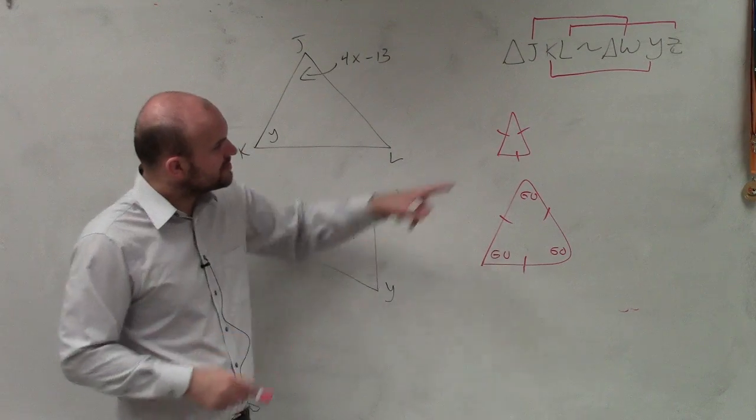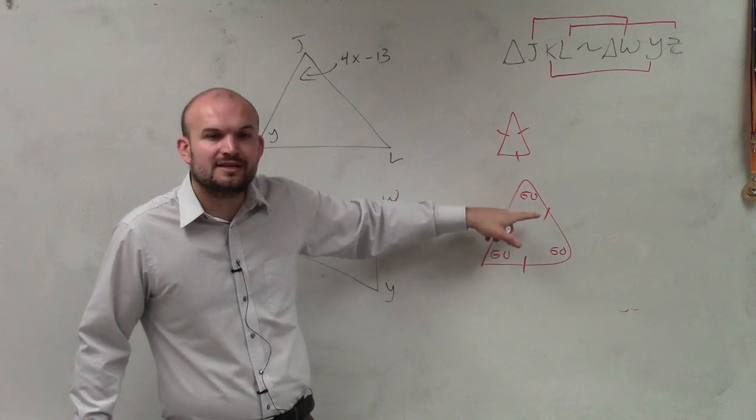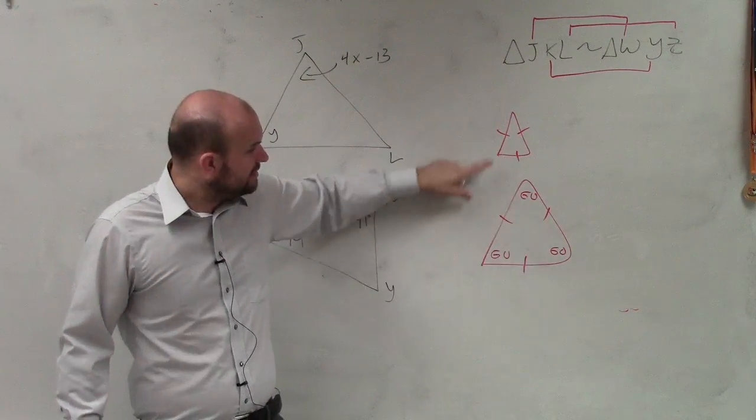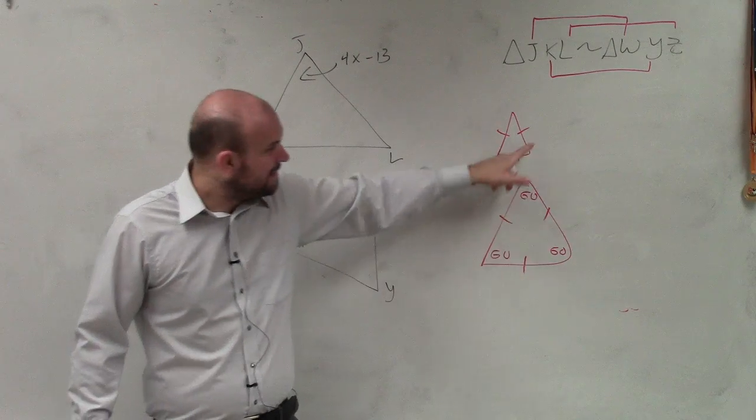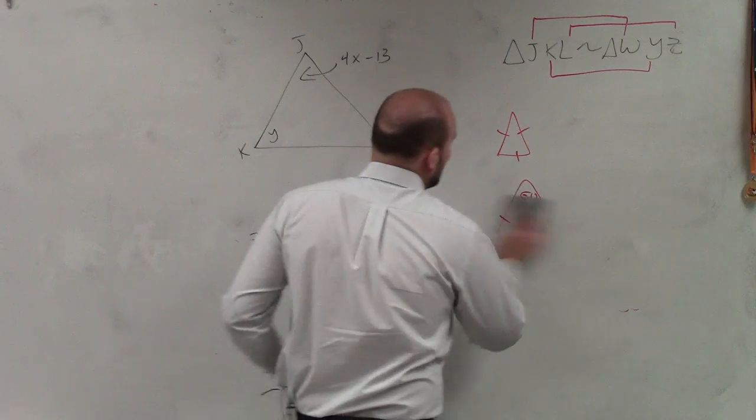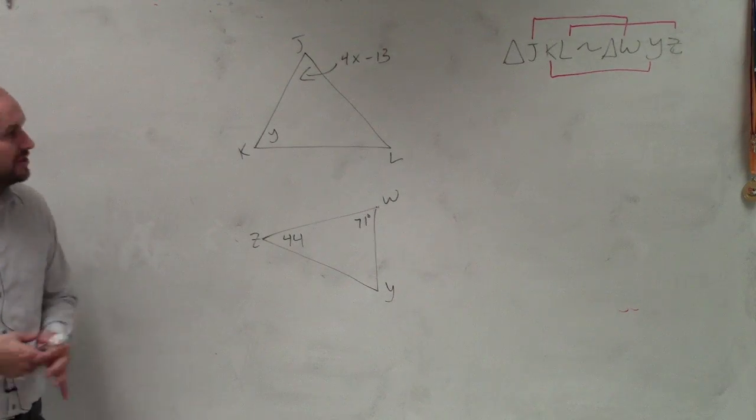So what I want you guys to understand is these two angles are corresponding to each other. So since they're corresponding and they're similar, these two angles are going to be equal in measure. So when we're trying to find these angles, I want to find the two angles that are corresponding to each other and set them equal to each other.